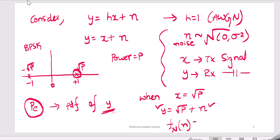So how will you write the PDF of noise? Let's say I will write it like this: 1 by square root of 2 pi sigma square, e to the power of minus n square by 2 sigma square.